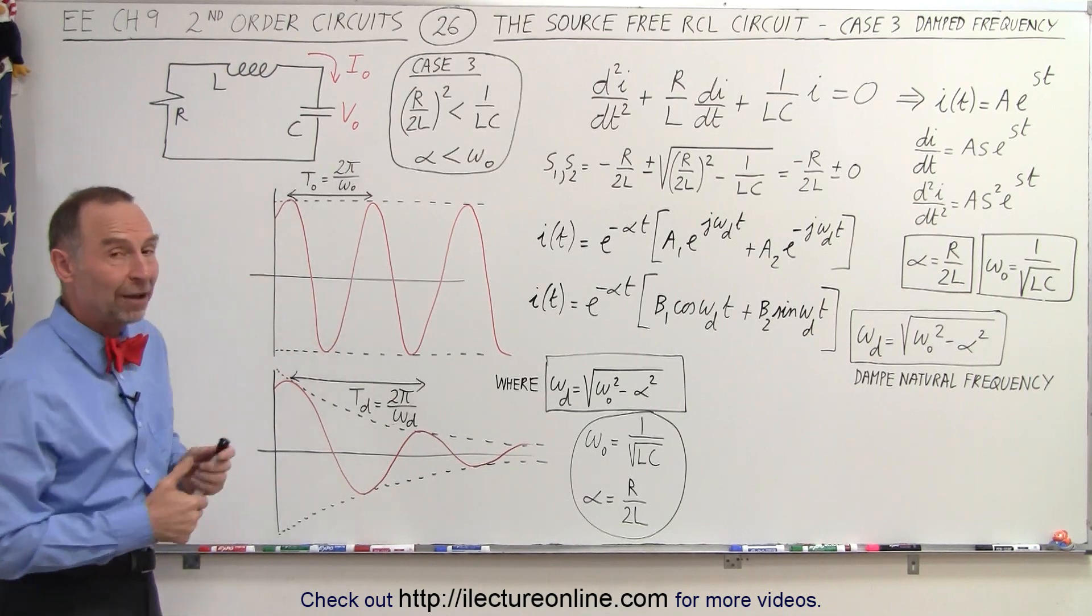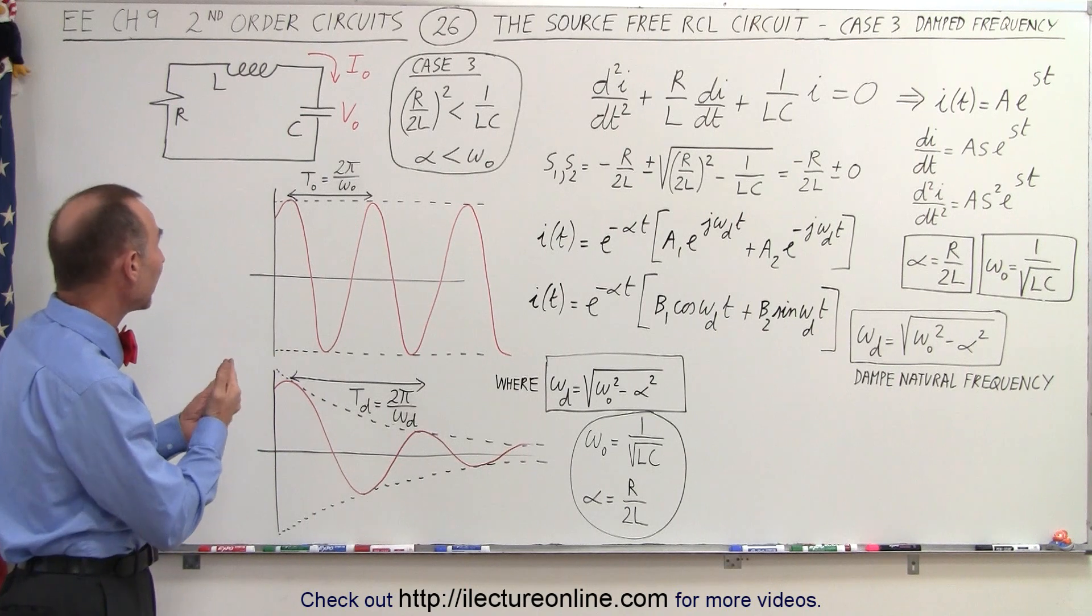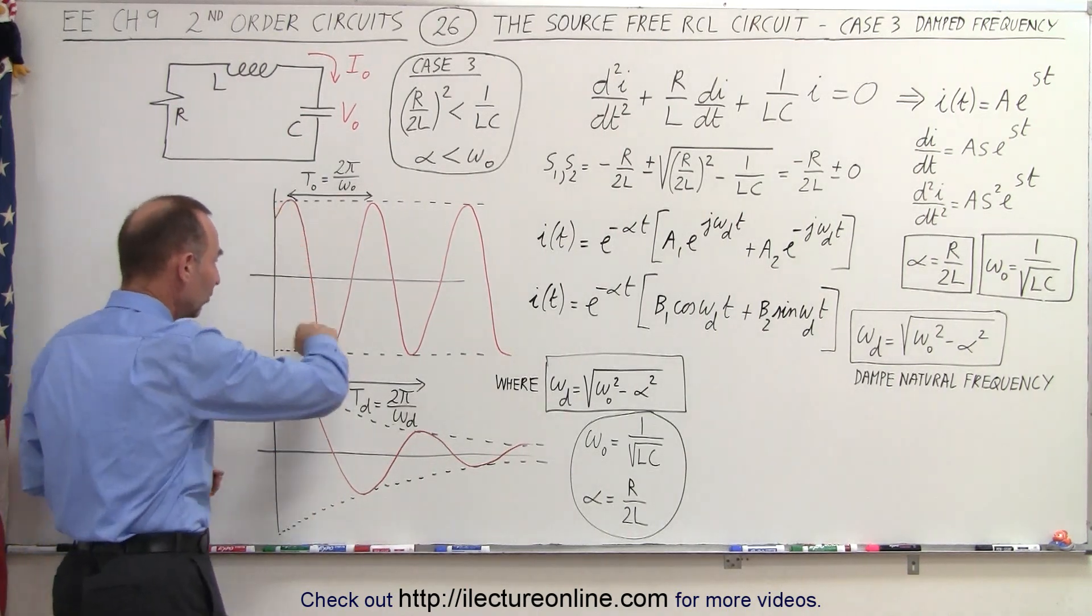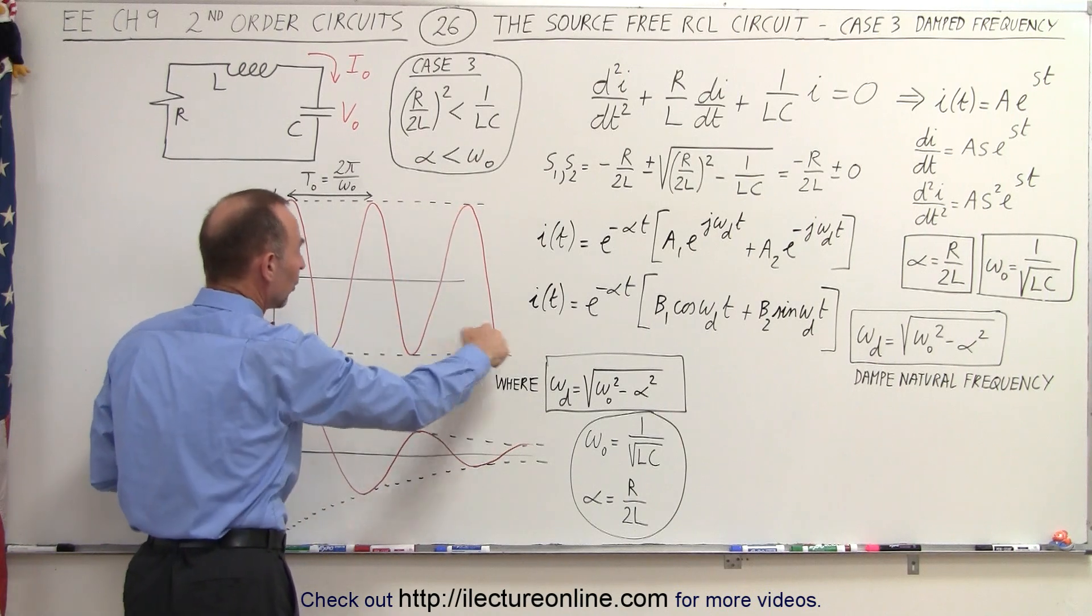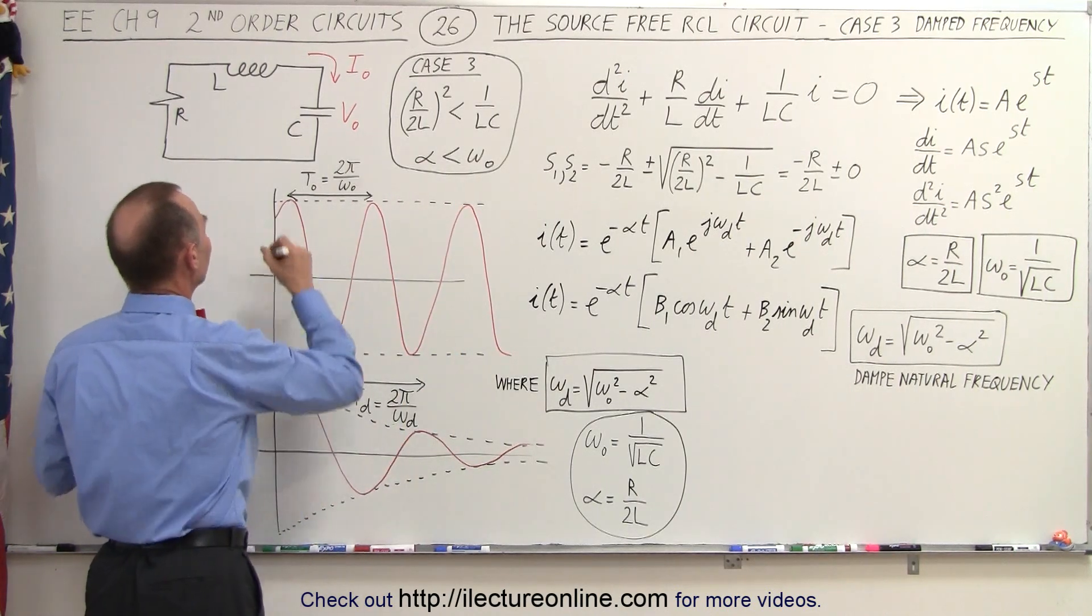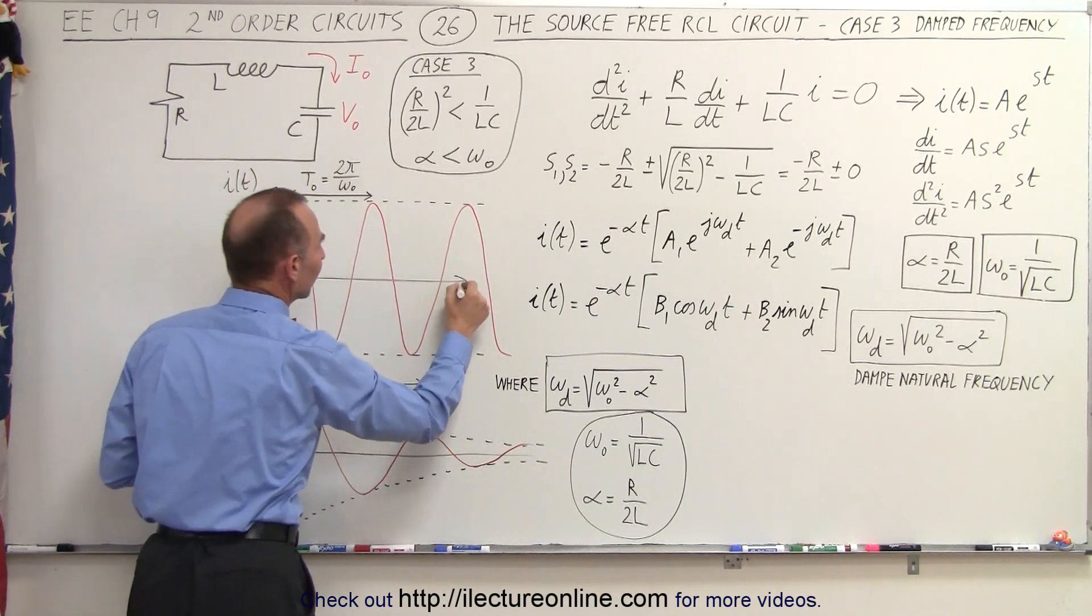Here we have a graph that we would see if we had a non-damped system. If all we had was an inductor and a capacitor, this would be the representation of the current as a function of time. Let me write that on the graph: i(t) versus time.